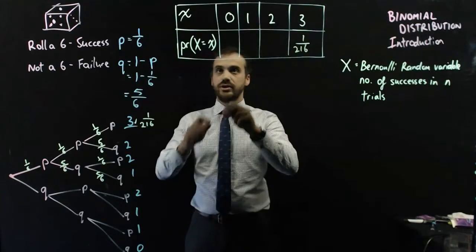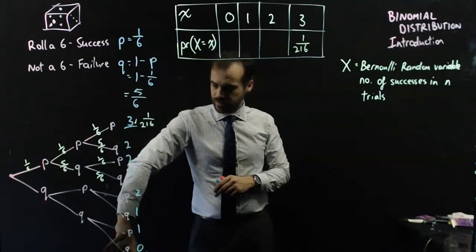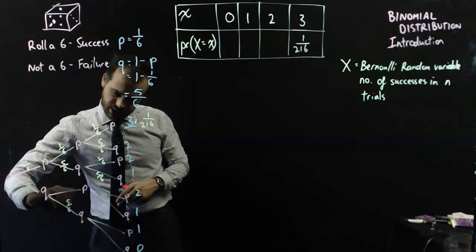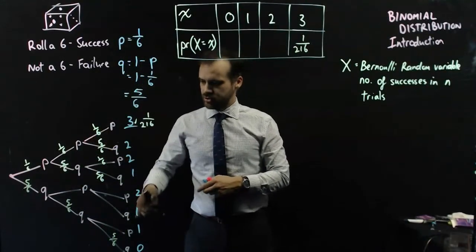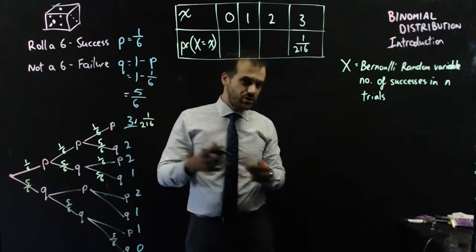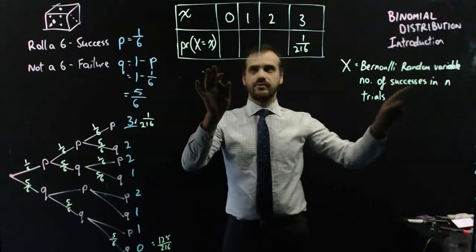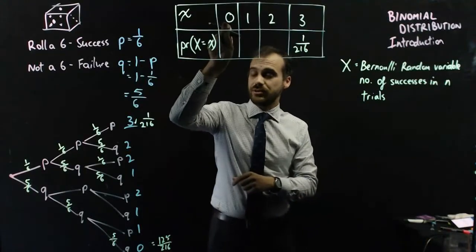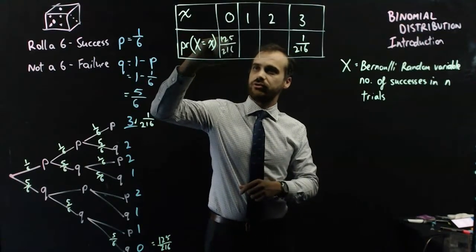On the other end of the spectrum, we have the 0 here down the bottom. That's 5 in 6, 5 in 6 times 5 in 6. That's 125 out of 216. So the probability that the number of successes in 3 trials is equal to 0 is 125 out of 216.